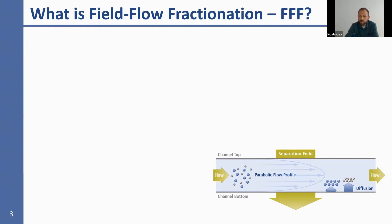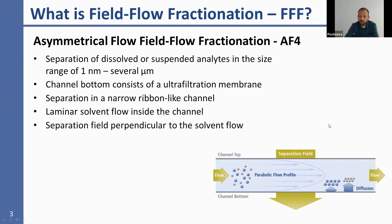The separation field counteracts the Brownian motion of the particles. Smaller particles, which have a higher diffusion coefficient, will locate closer to the channel center and will experience a higher streaming velocity, and therefore they will elute prior to larger ones. I will present mainly the most common sub-technique of FFF: asymmetrical flow field flow fractionation, or AF4, where the separation field is a flow field.